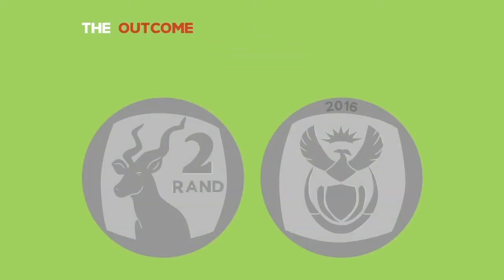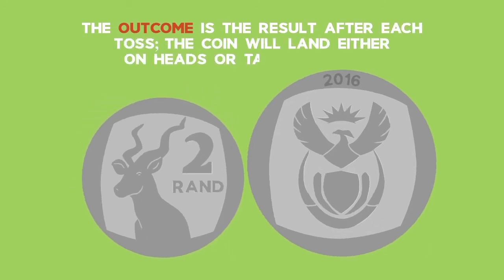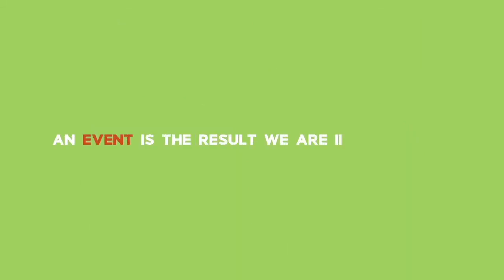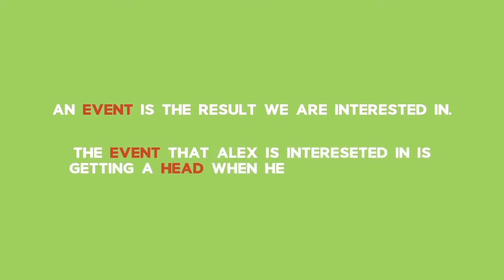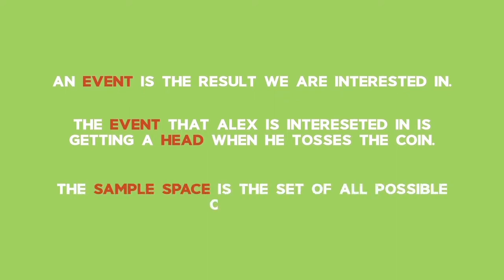The outcome is the result after each toss. The coin will land either on heads or tails each time. An event is the result we are interested in. The event that Alex is interested in is getting a head when he tosses the coin.